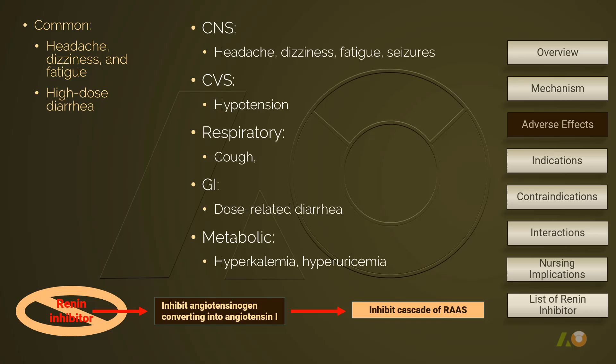A renin inhibitor is well tolerated. There are no major adverse effects reported in clinical trials. The most common reported side effects are headache, dizziness, and fatigue. The dose-related GI disturbance is diarrhea. Cough is rare — only about one-third to one-half of the rate reported with usage of ACE inhibitors. Hyperkalemia rarely occurs, but incidence increases when the renin inhibitor is used in combination with ACE inhibitors.